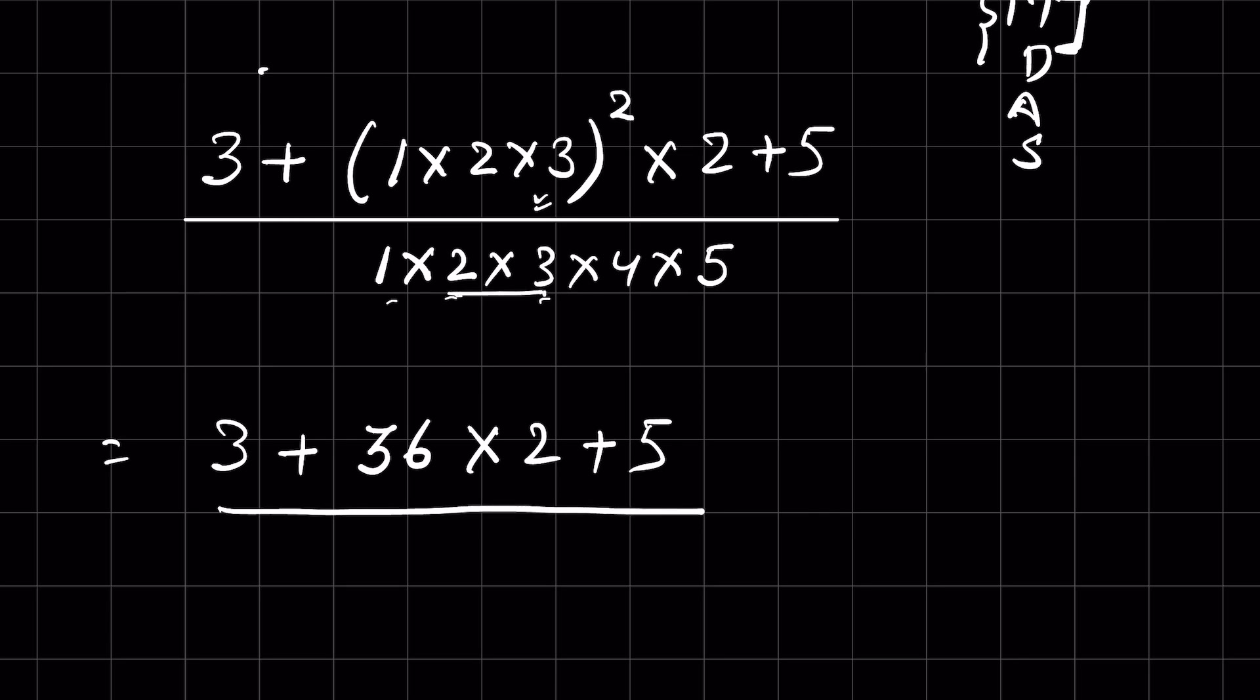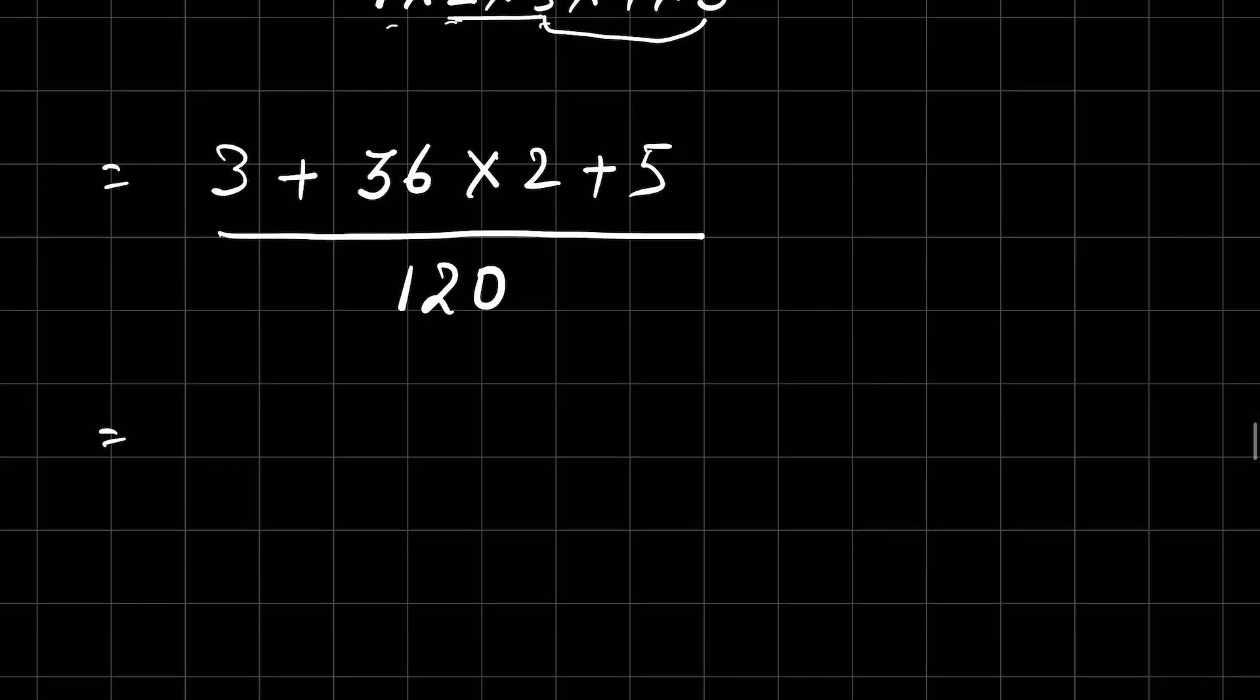6 times 5 is 30, and 30 times 4 is 120. Now before addition, do the multiplication. 36 times 2 is 72 upon 120. 3 plus 72 plus 5 is equal to 80 upon 120.